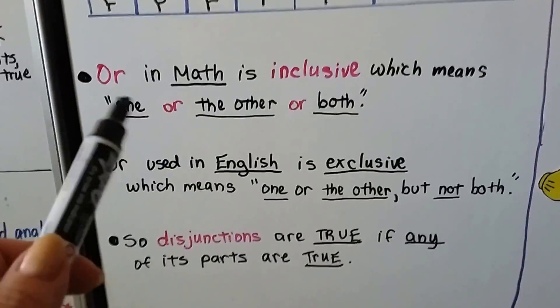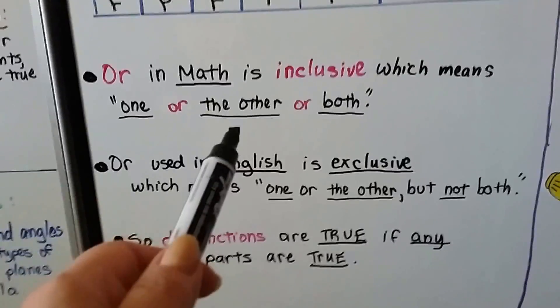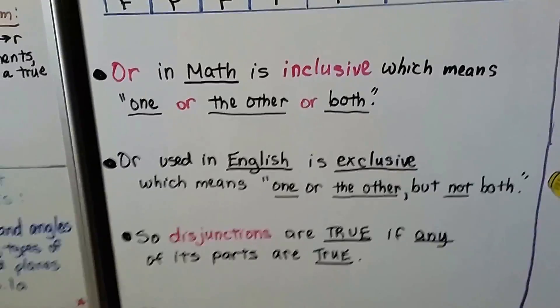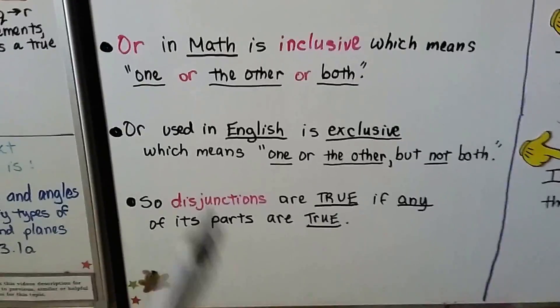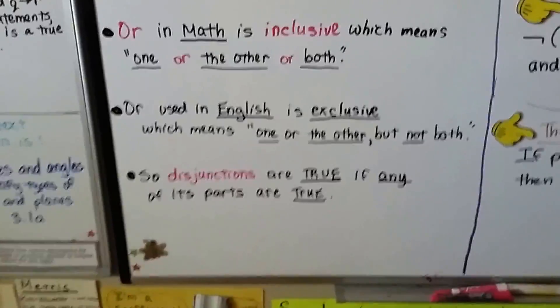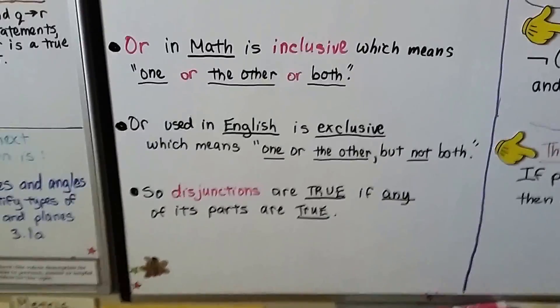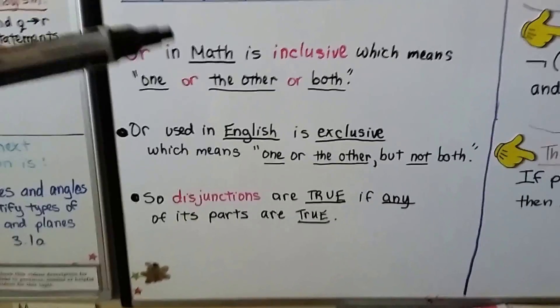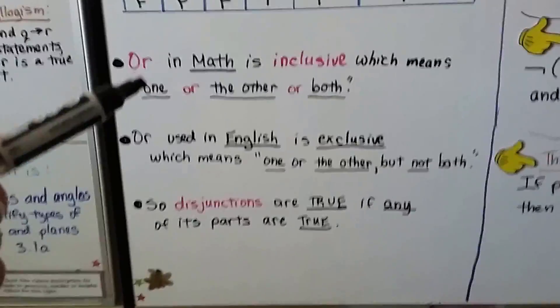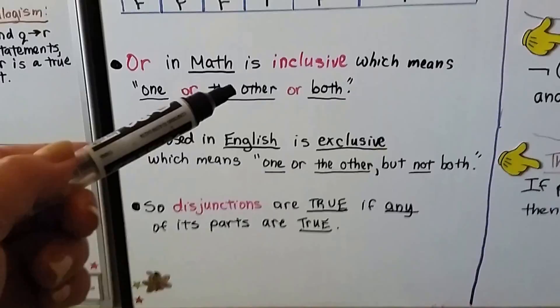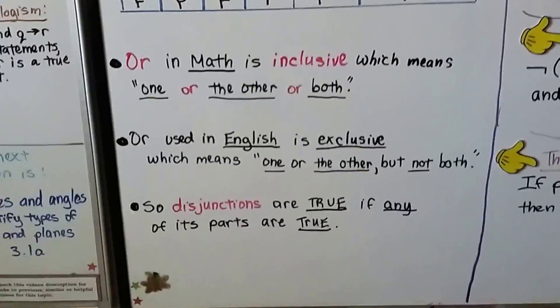In math, it could be A, it could be B, or it could be A and B. In English, it's just A or B, not both. So disjunctions are true if any of its parts are true because of this. So if A is true and B is false, then it's still true, because one part is true.